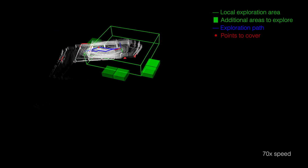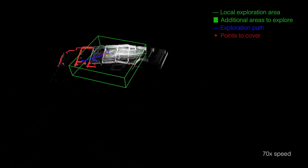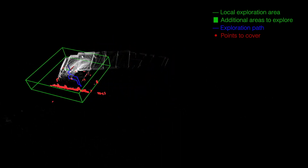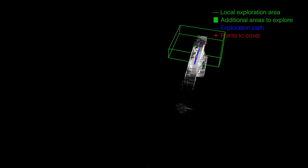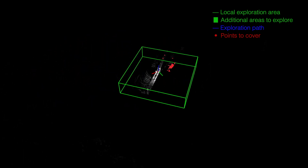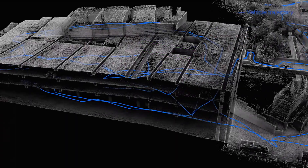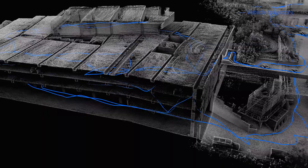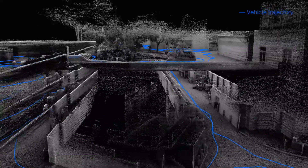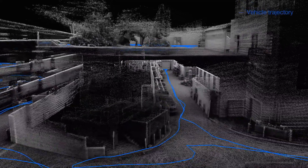What we are seeing now is the overall exploration process at 70 times the real-time speed. The blue path here is the path that the vehicle followed to fulfill the exploration. Here we are seeing the final map built by the system as the vehicle drove — no post-processing is involved. The environment is complex and three-dimensional. The run lasted for 31 minutes. The vehicle traveled over 1.8 km and drove at 2 m per second throughout the run.